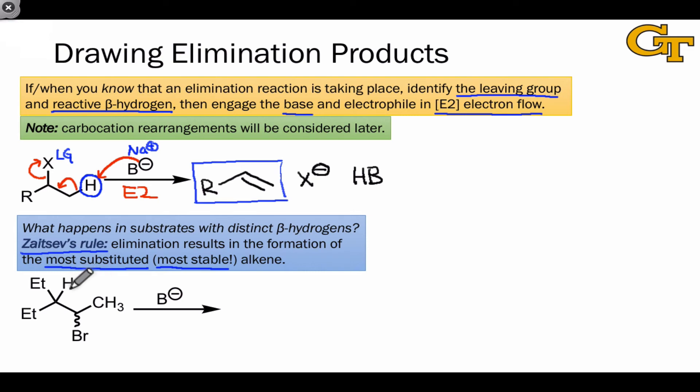Let's look at an example of applying Zaitsev's rule. In this substrate, we have two distinct sets of beta hydrogens: this methane hydrogen and these methyl hydrogens. Elimination of the methane proton would create a double bond between this carbon and this carbon. And upon drawing that product, we can see that the alkene is trisubstituted with three alkyl groups linked to the sp2 hybridized carbons—two ethyl groups and a CH3 group.